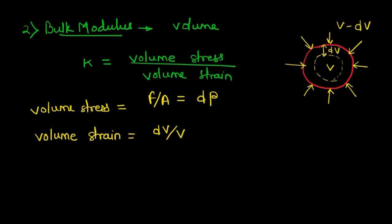Now if we have to create a bulk modulus equation, we can write a bulk modulus K is equal to dP divided by dV by V, and by rearranging the terms we will get V into dP by dV.